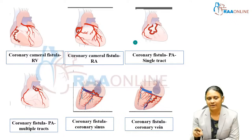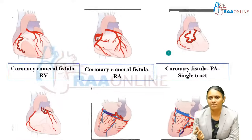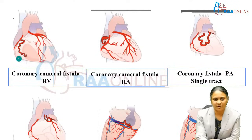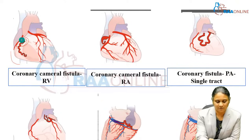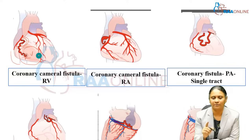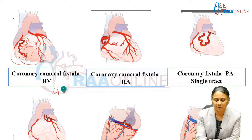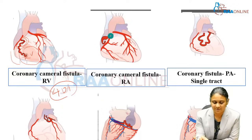This is another anatomic classification useful for understanding the anatomy of the course of the fistula's tract. Here is a coronary cameral fistula where the right coronary artery gives rise to the fistula's tract. The normal RCA is shown, while the abnormal single tract is a dilated vascular channel draining into the right ventricle, which is the commonest site of termination at up to 40 percent.